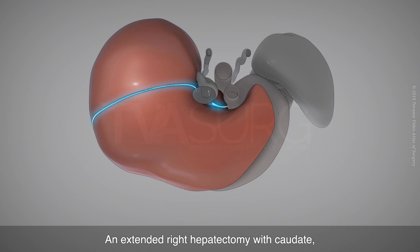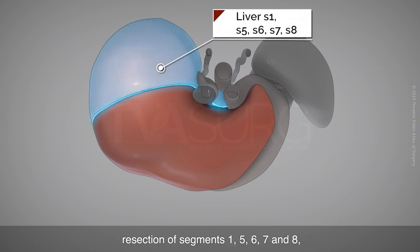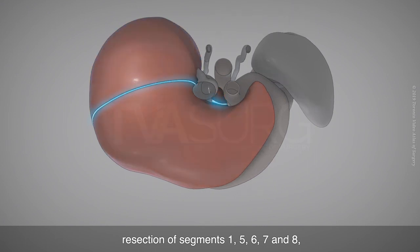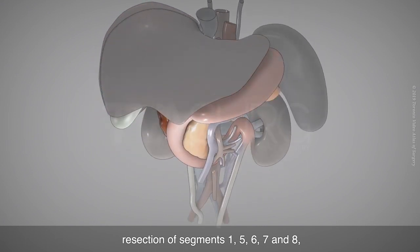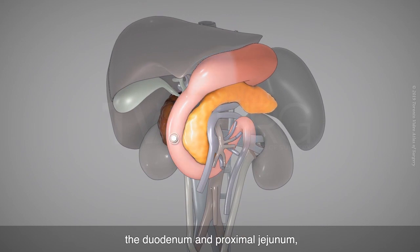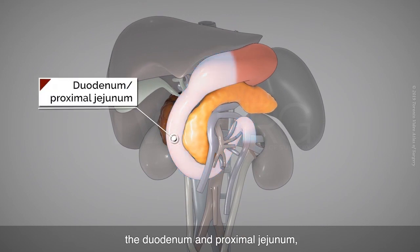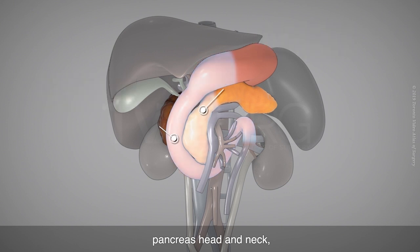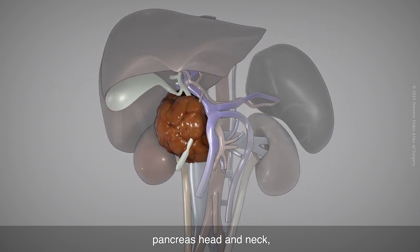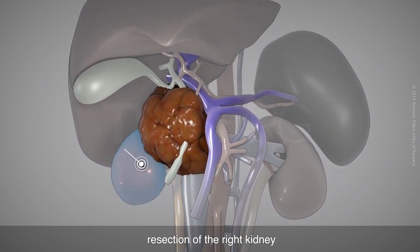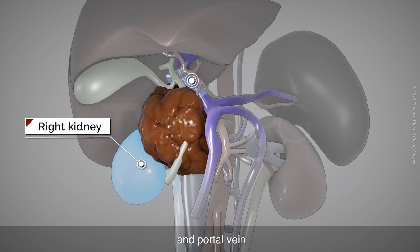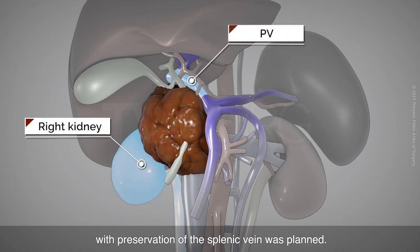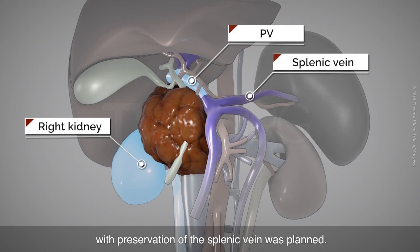An extended right hepatectomy with caudate resection of segments 1, 5, 6, 7, and 8 was planned, along with resection of the duodenum and proximal jejunum, pancreas head and neck, right kidney, and portal vein, with preservation of the splenic vein.